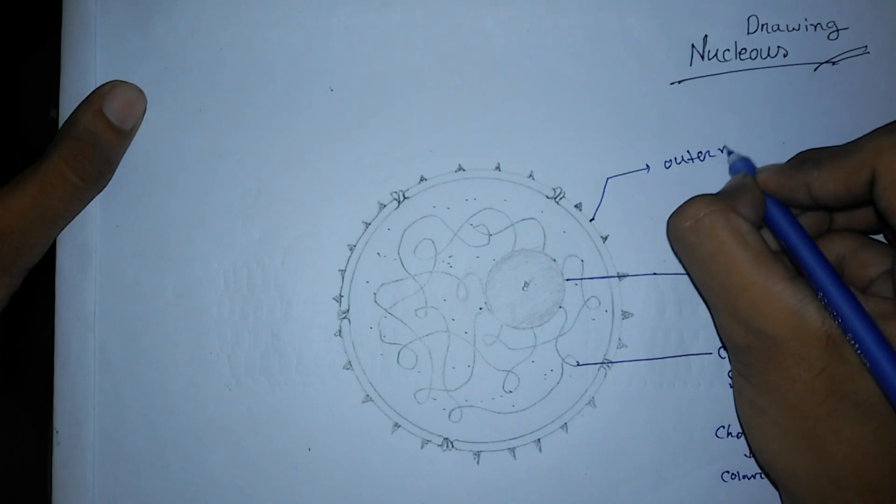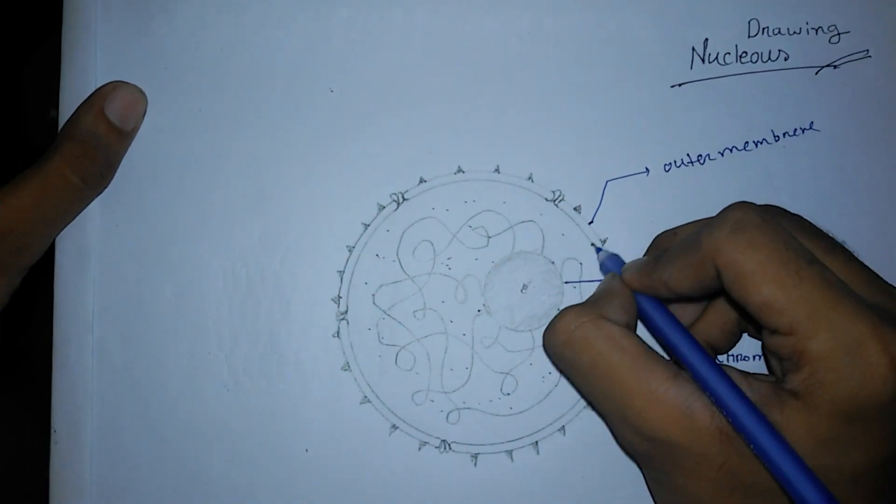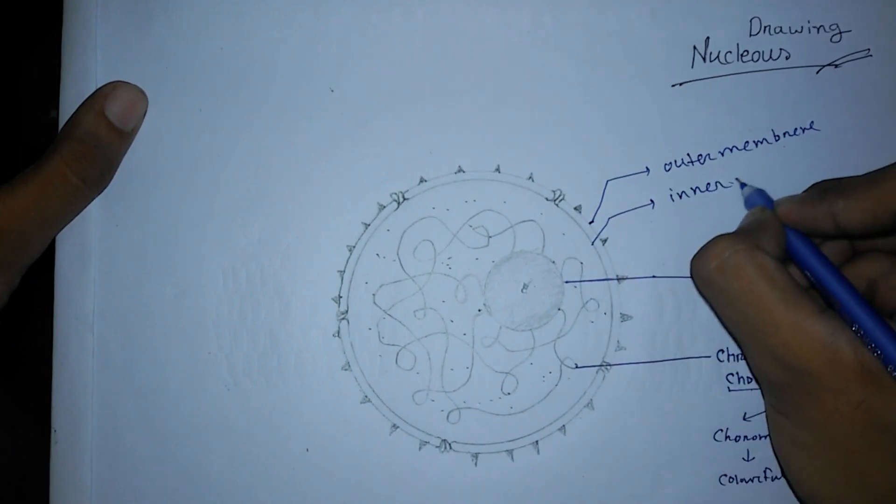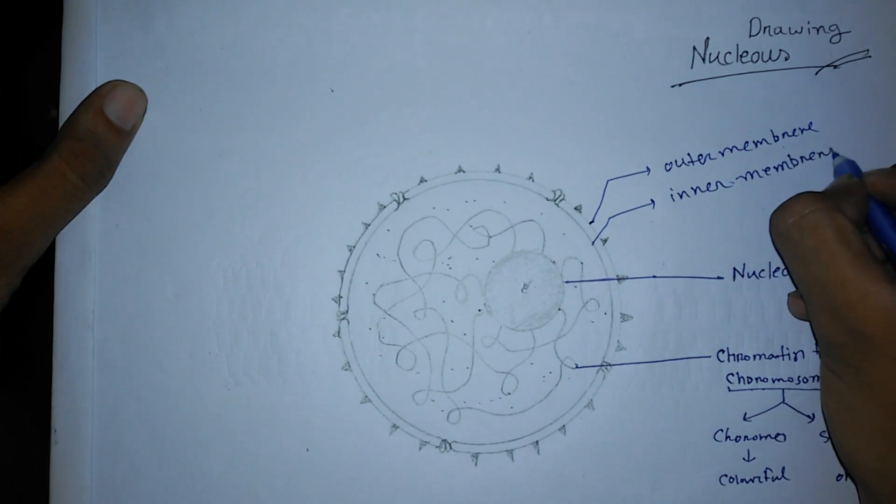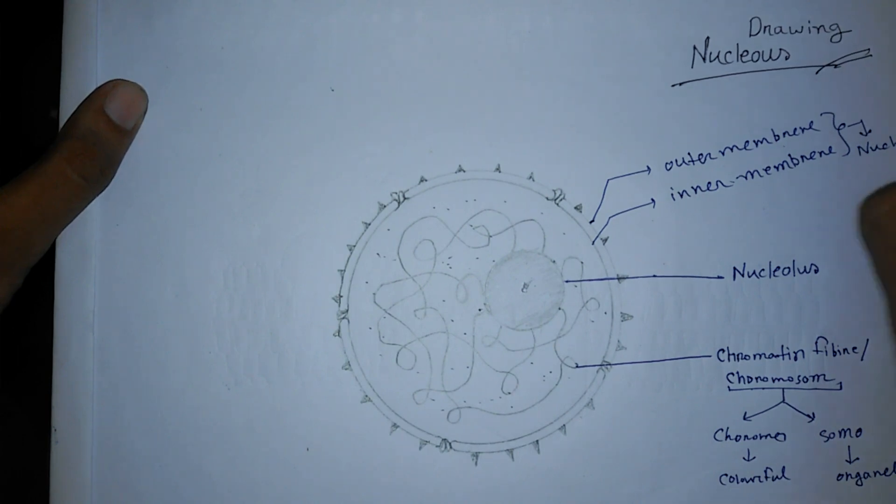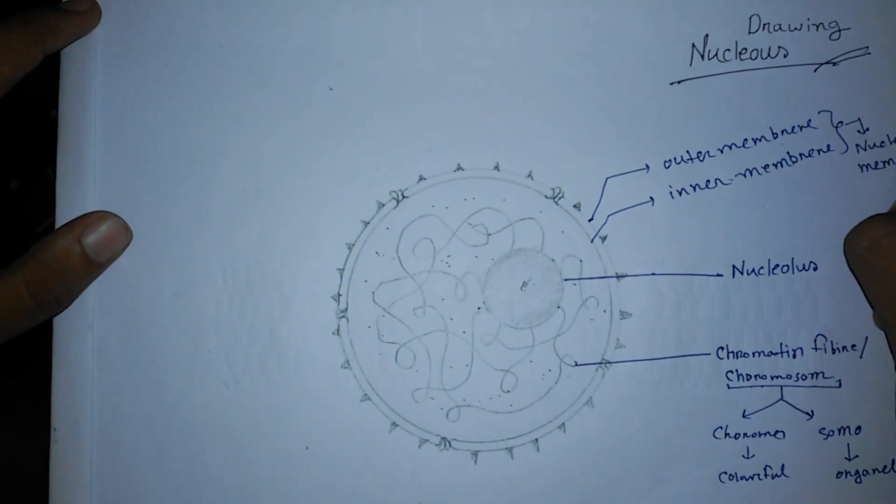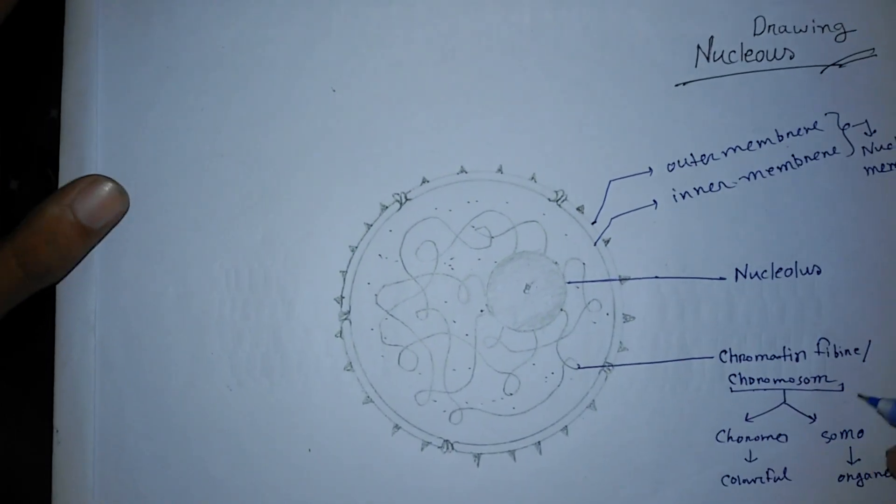Together this is called the nuclear membrane. We are done with the nuclear membrane and chromosome.